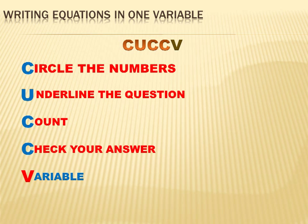I've modified the CUCCV strategy for math and algebra by adding V for variable. If it's an algebra problem, you've got to create a symbol that represents what you're trying to solve for. That symbol may be x, it could be b, it could be a — but you're going to need a variable, and sometimes you need more than one. So CUCCV stands for: circle the numbers, underline the question, count, check your answer, and insert a variable or variables.